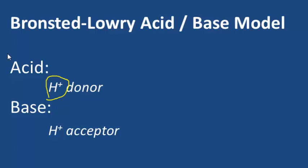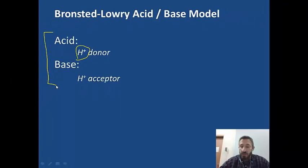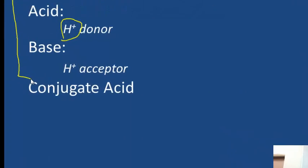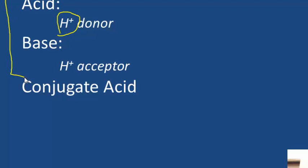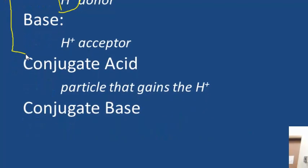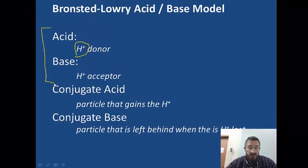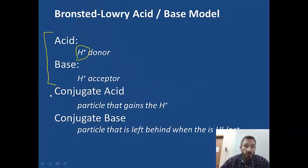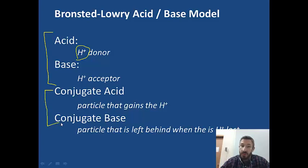When you write a reaction, the acid and base are normally going to be the reactants. Next, a conjugate acid is a particle that accepted the proton — the particle that gains the proton is the conjugate acid. The particle that lost the proton is going to be the conjugate base, or what's left behind. These conjugate acids and conjugate bases will be products in the reactions we're looking at.